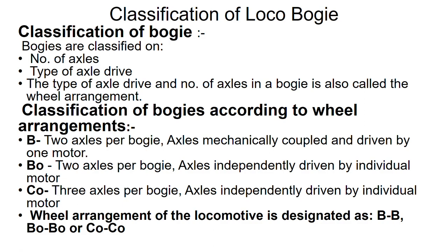In B-type bogie, there are two axles per bogie, with axles mechanically coupled and driven by one motor. But in Bo-type bogie, there are also two axles per bogie, but the axles are independently driven by individual motors — in each axle there is a motor. In Co-type bogie, there are three axles per bogie, with axles independently driven by individual motors.